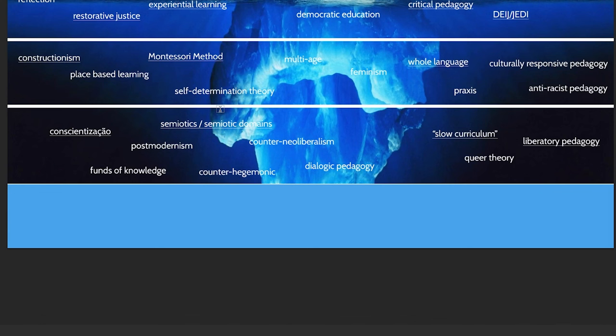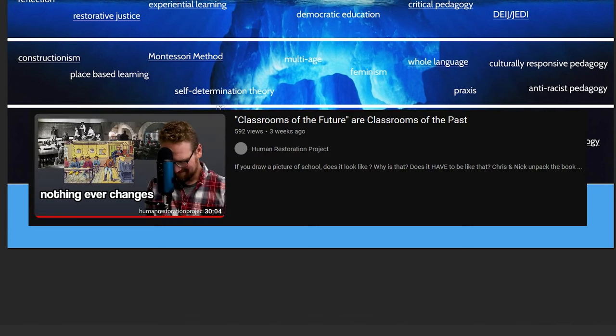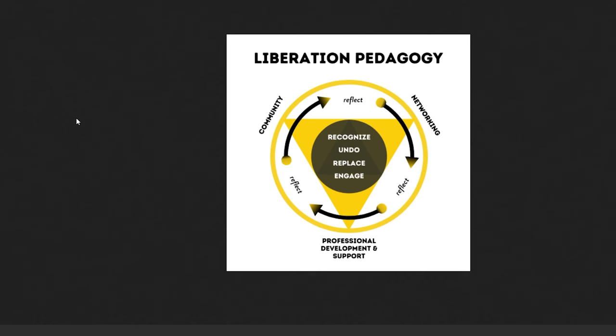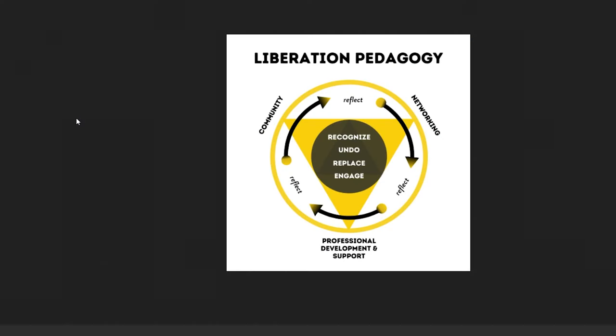It's like an interesting way to think about professional development for schools that we don't usually think about. If you want to learn more about semiotics — the sign and all that — you can watch our previous video on the Mandalorian where we dive into it. Liberatory pedagogy is like the ultimate version of DEIJ. If we take DEIJ and anti-racist education and bring them into the weeds and are actually doing something with it — recognizing, and then these cool action words: undo, replace, engage. It's not just tacking on additional perspectives; it's actually replacing things that are there.